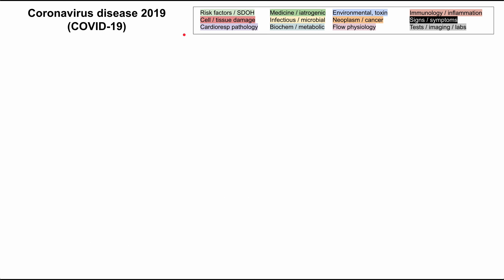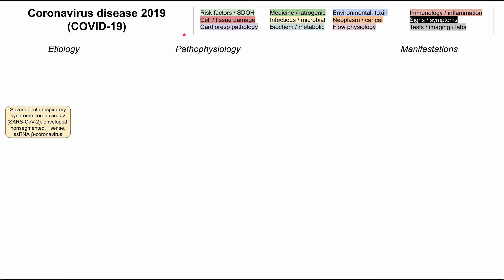COVID-19 is caused by a virus called SARS-CoV-2, which is short for Severe Acute Respiratory Syndrome Coronavirus 2. We found that this is an enveloped, non-segmented, positive-strand, single-stranded RNA, beta coronavirus.